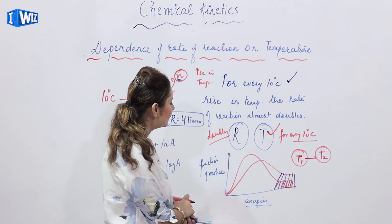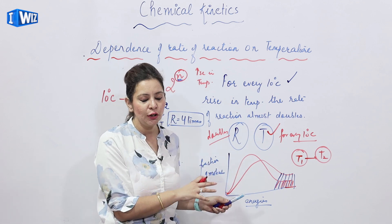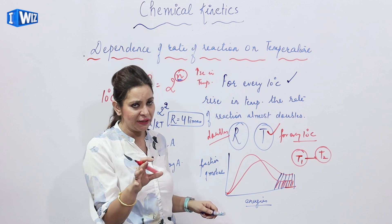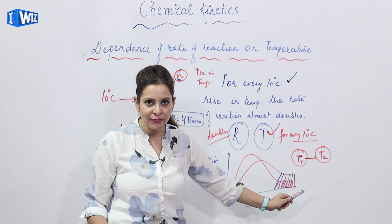This is how you are going to explain it that you are going to draw a graph. Let us say you are explaining on Maxwell-Boltzmann distribution of speed graph. Fractional molecule versus energy. Let's say at temperature T1, we have a graph like this.